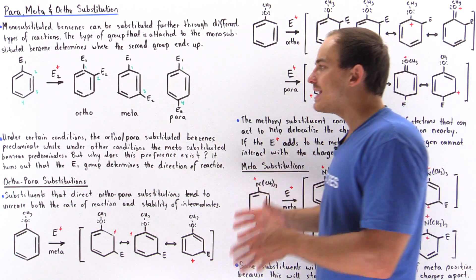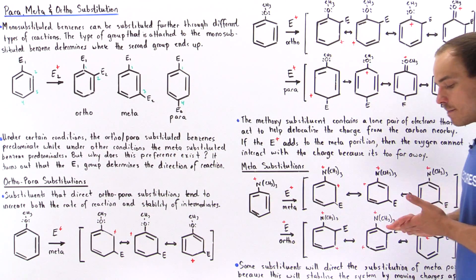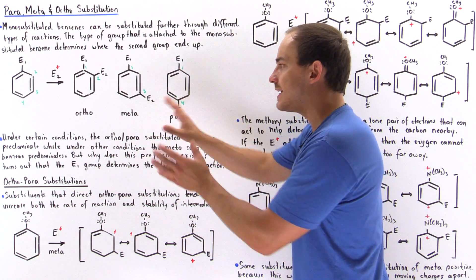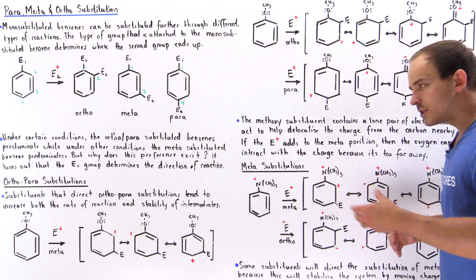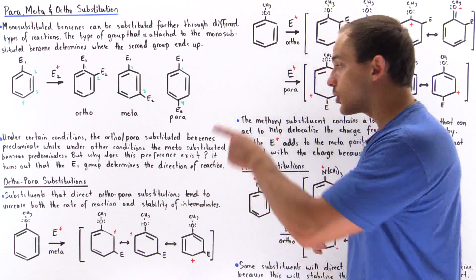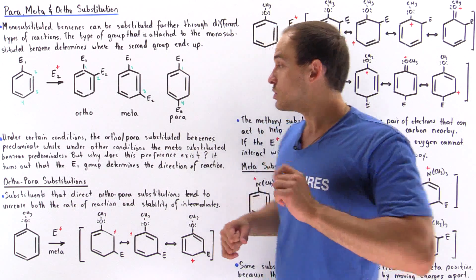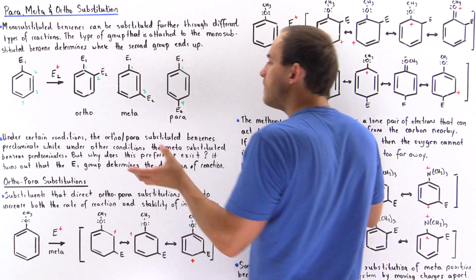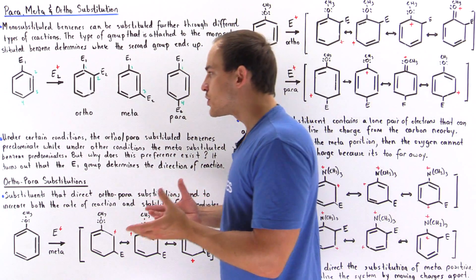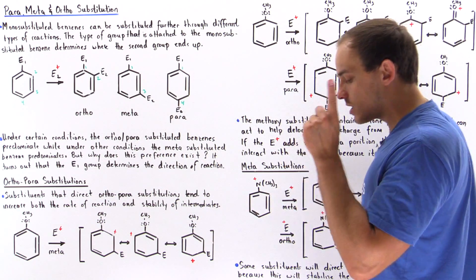The question is: when is ortho formed, when is para formed, and when is meta formed? It turns out that ortho and para are formed together while meta is formed by itself. Under certain conditions, the ortho-para substituted benzenes will predominate, while under other conditions the meta-substituted benzene will predominate.